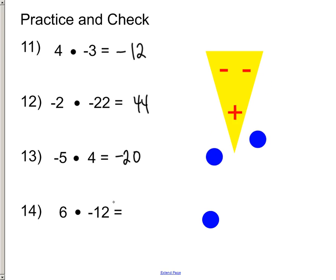And then, 6 times 12 is 72. Positive times negative. So, cover the positive, cover up the negative. This means that your answer will be negative.